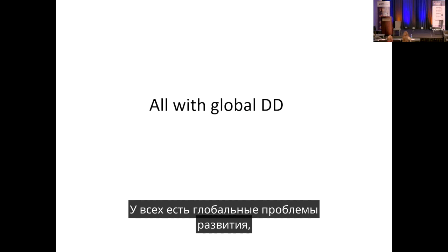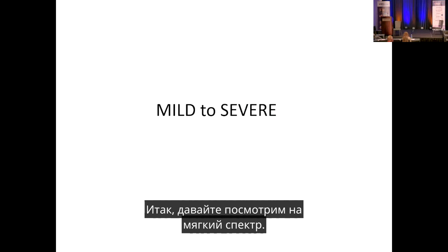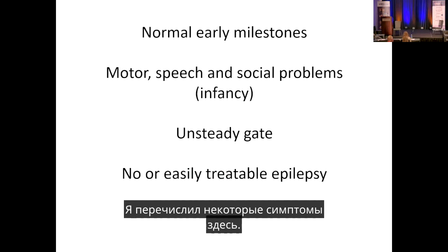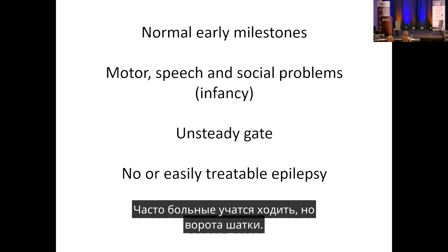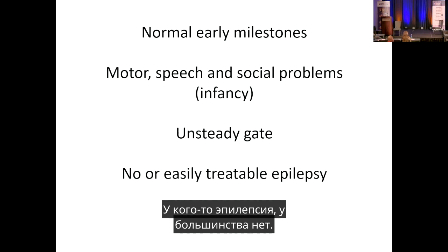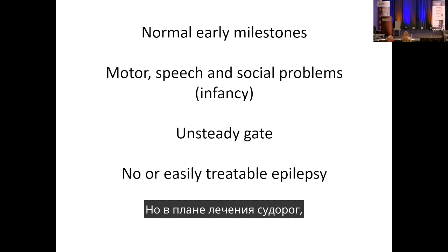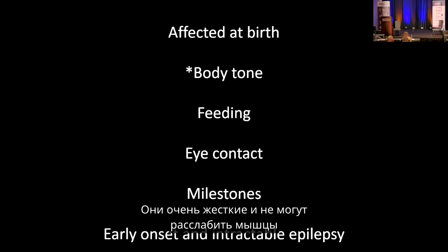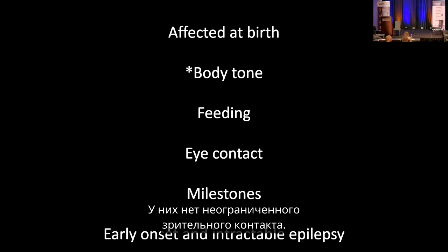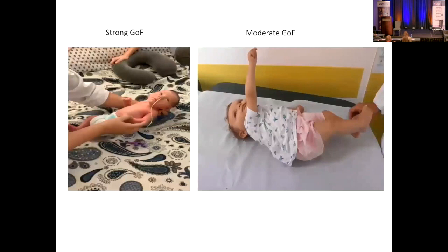On the mild end of the spectrum, early milestones are often normal but developmental problems emerge around infancy. Patients typically learn to walk but have unsteady gait. Epilepsy is present in some but not most, and when present, seizures are relatively easy to treat and patients become seizure-free. On the severe end, patients are affected from birth — very stiff, unable to feed, dependent on feeding tubes, with minimal eye contact, no development, and early-onset refractory epilepsy.